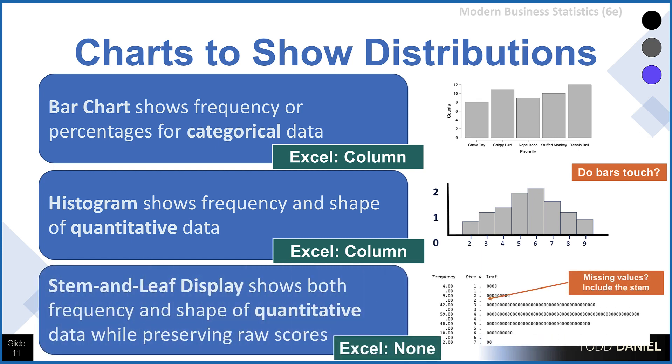The stem and leaf diagram gives us the best of the histogram and a frequency table by displaying both the frequency and the shape of the qualitative variable while also preserving the raw scores. There's not a simple way to create a stem and leaf display in Excel. Note that if you create a stem and leaf and you do not have values for a given stem, so for example, you have scores in the 60s and 70s, and you have scores in the 90s, but no scores in the 80s, you should still include 8 as a stem, but you would leave the leaves blank.